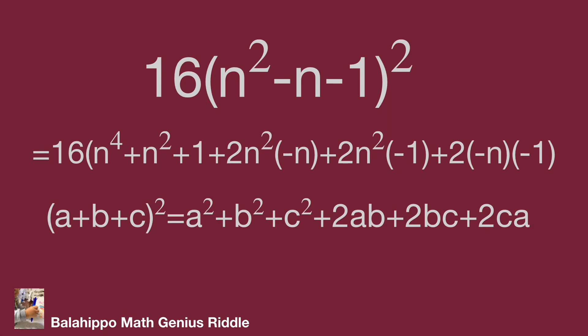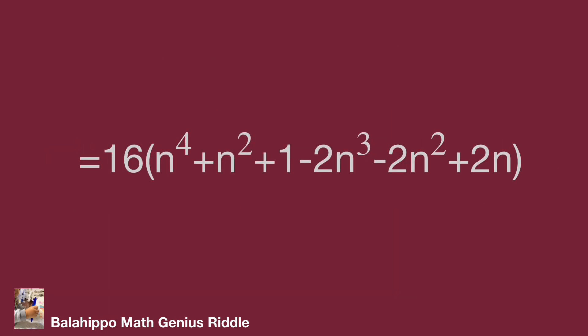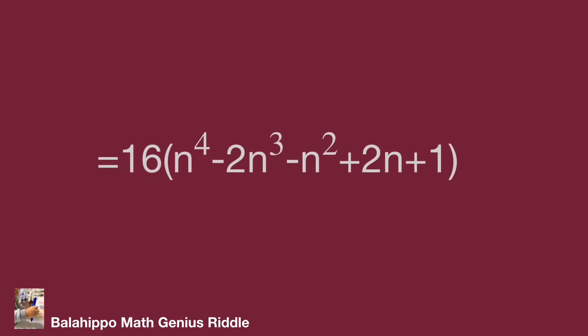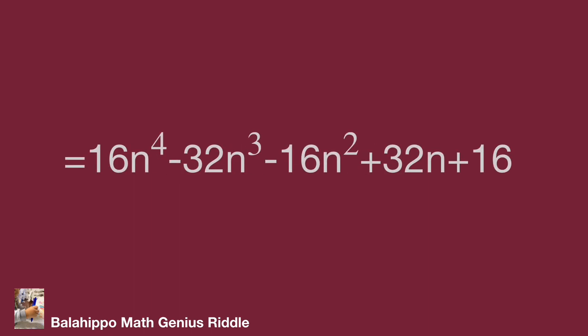Develop the item as listed in the video. Simplify as 16 times bracket n to the 4th plus n squared plus 1 minus 2n cubed minus 2n squared plus 2n bracket. Develop to the final form: 16n to the 4th minus 32n cubed minus 16n squared plus 32n plus 16.